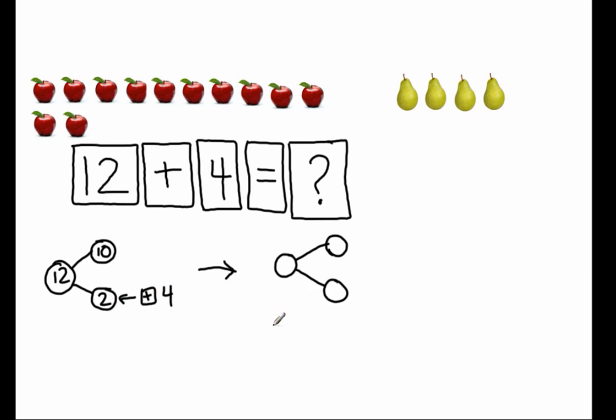Two plus four equals, let's see. I know that when I'm adding, I can take the higher number and start with that first and count on from that higher number. So I'm going to start with four and count on two more, five, six. So two plus four equals six.